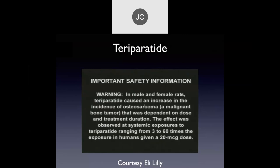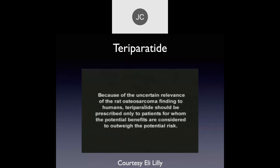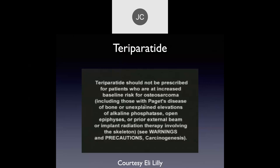Teriparatide caused an increase in the incidence of osteosarcoma in male and female rats — a malignant bone tumor dependent on dose and treatment duration. The effect was observed with systemic exposures ranging from 3 to 60 times the exposure in humans given a 20-microgram dose. Because of the uncertain relevance of the rat osteosarcoma finding to humans, teriparatide should be prescribed only to patients for whom the potential benefits outweigh the potential risk, and not for patients at increased baseline risk for osteosarcoma — including those with Paget's disease, unexplained elevations of alkaline phosphatase, open epiphyses, or prior radiation therapy involving the skeleton.